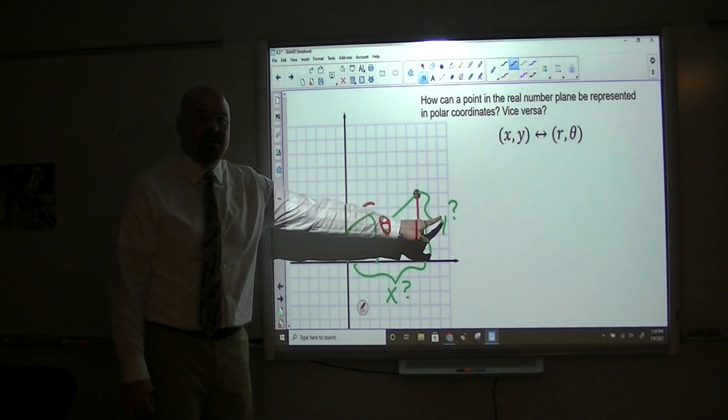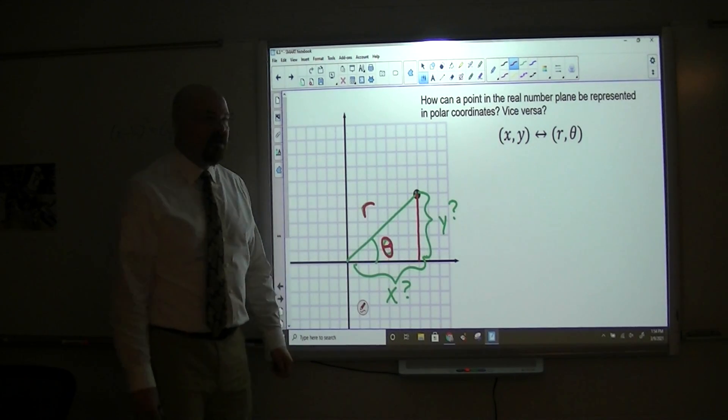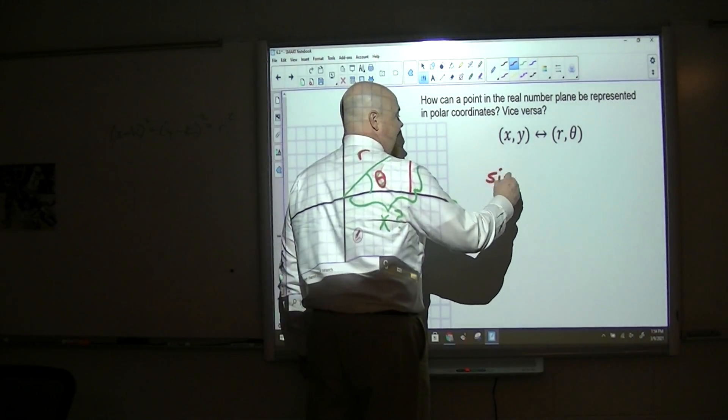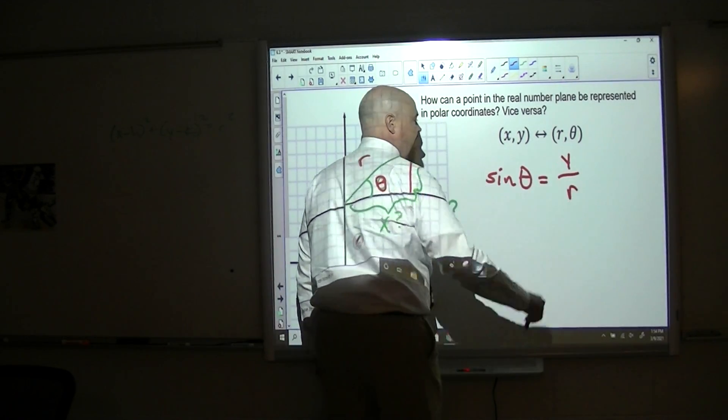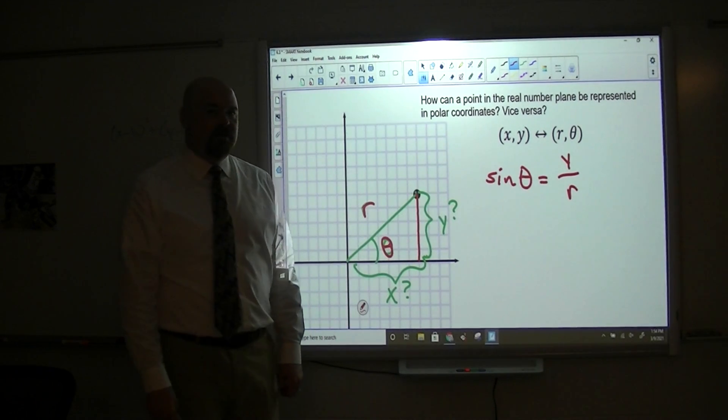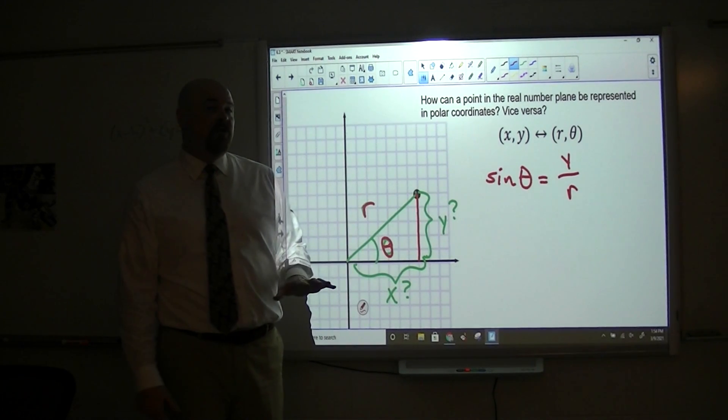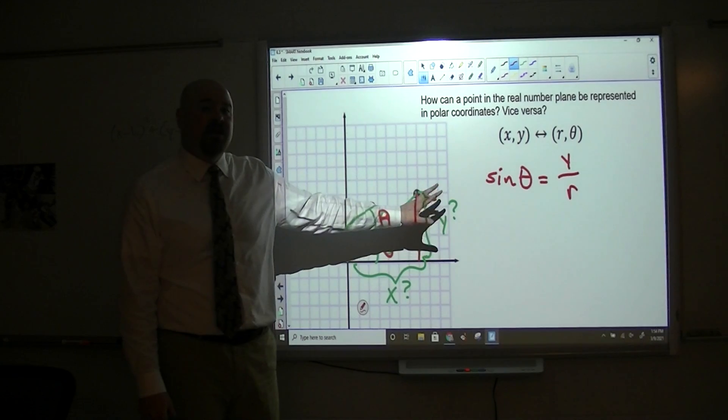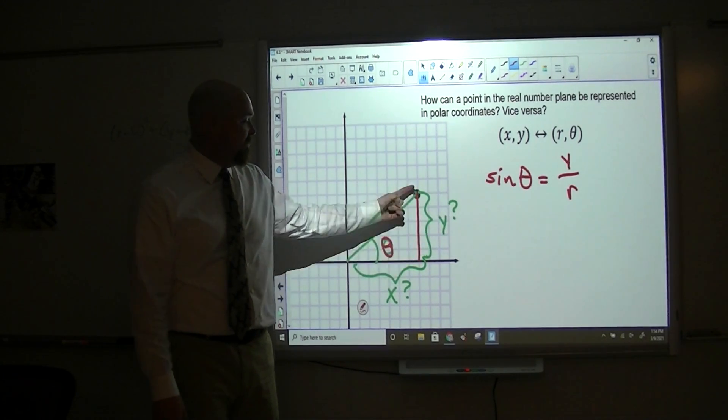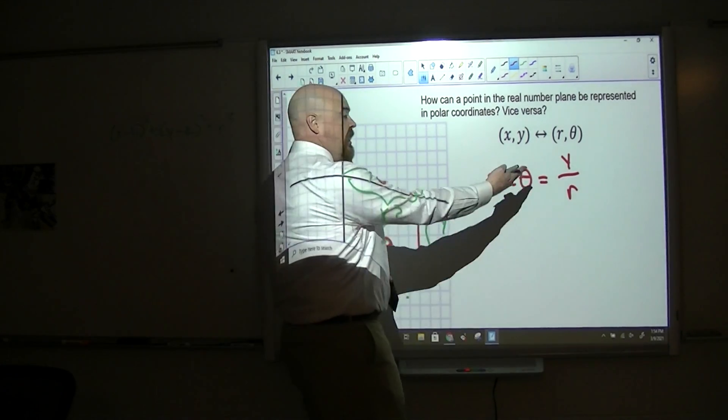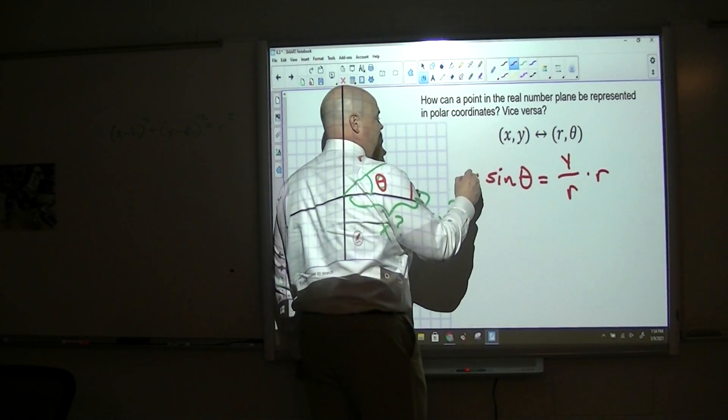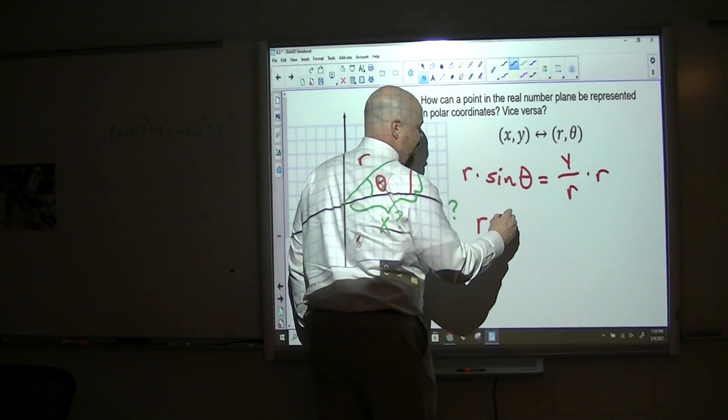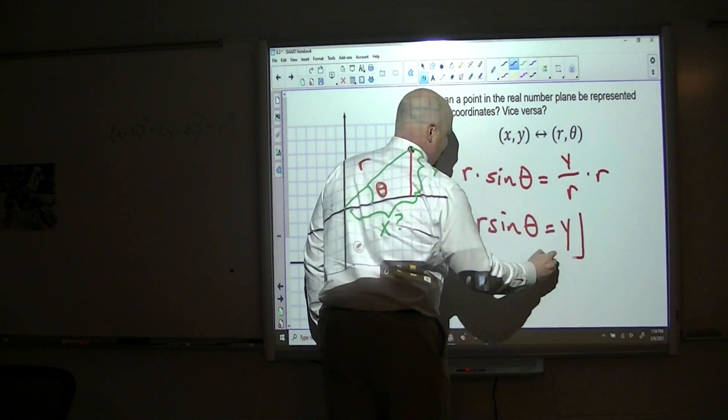Well, that side is opposite that angle. So you could say that the sine of theta is equal to y over r, and don't lose sight of what we're trying to do here. We're trying to find y. We're trying to find the value of this vertical displacement. So how would I solve for y in this equation? I'd multiply both sides by r. So I'd have r sine theta equals y.